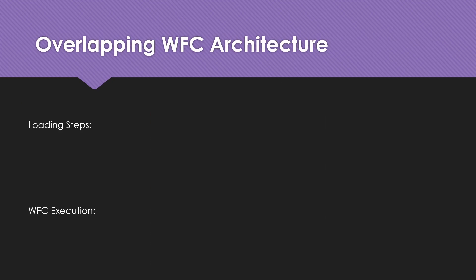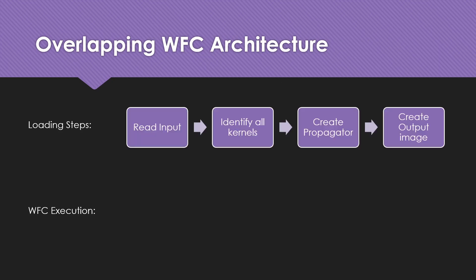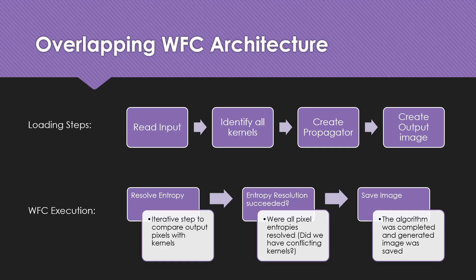The overlapping wave function collapse architecture involves two stages: the loading steps and the WFC execution steps. The loading steps involve reading an input, identifying the kernels, creating a wave function collapse propagator, and generating the output image. The execution of WFC involves resolving entropy, checking if the entropy resolution succeeded, and if so, saving the image.